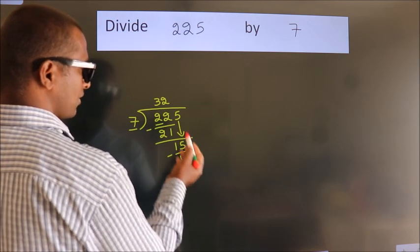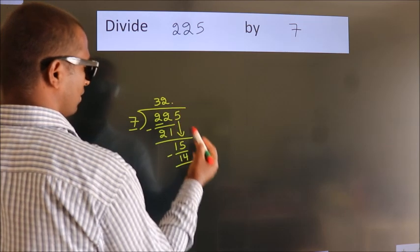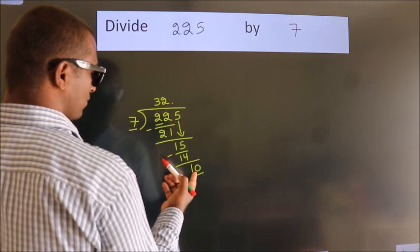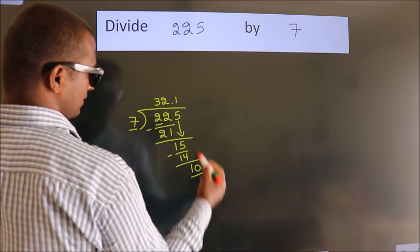After this, no more numbers to bring it down. So what we do is, we put dot take 0. So 10. A number close to 10 in the 7 table is 7 ones 7.